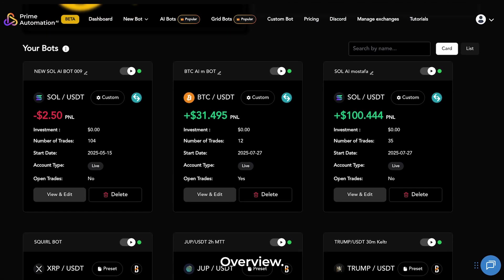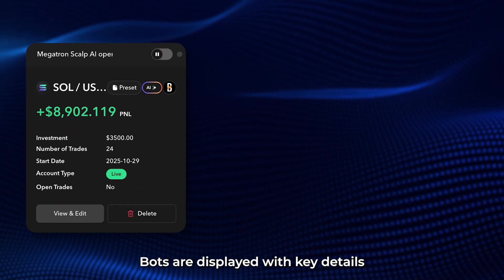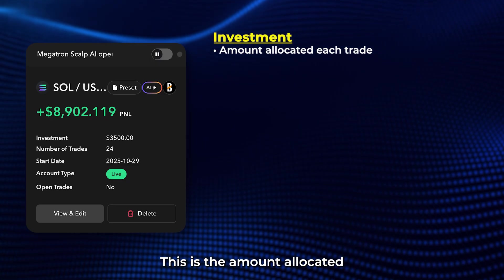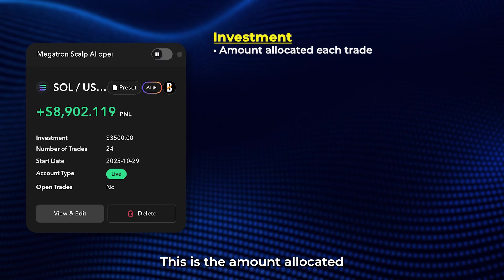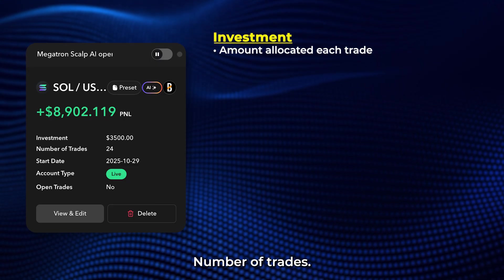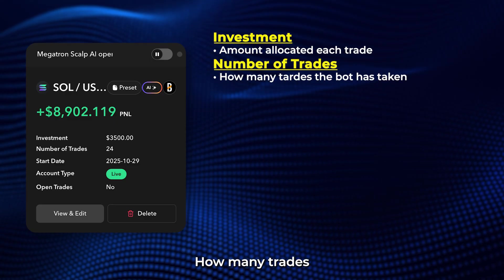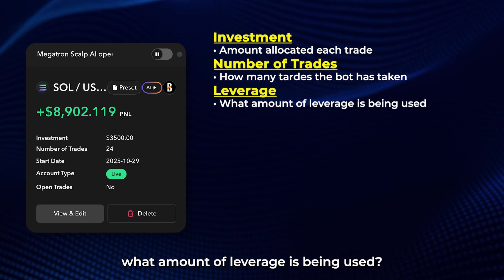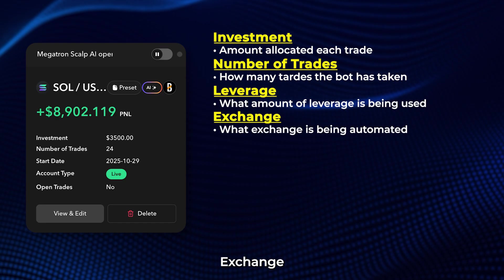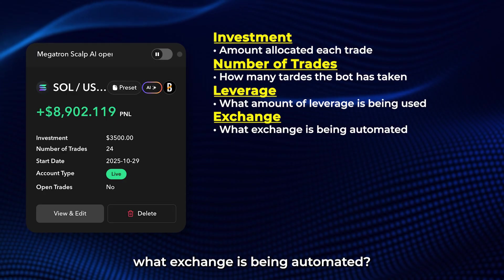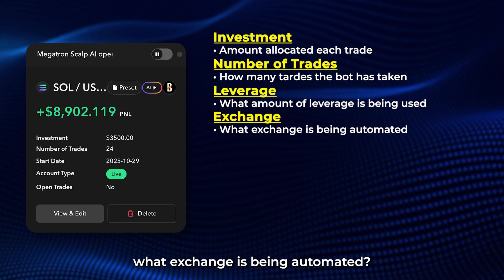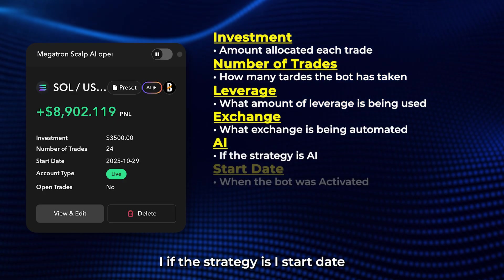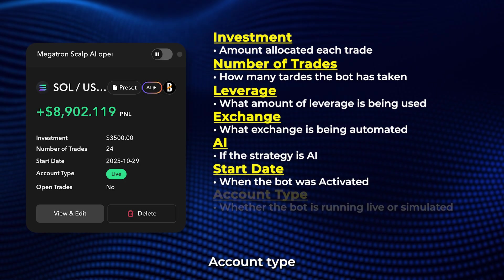Next, we move to your bots overview. Bots are displayed with key details, including investments per trade — the amount allocated each time the bot executes a trade — number of trades, how many trades that bot has taken, leverage, what amount of leverage is being used, exchange, what exchange is being automated, AI, if the strategy is AI, and start date, when the bot was activated.